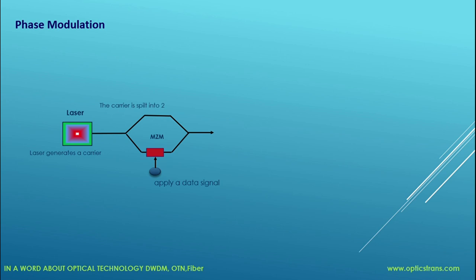Let's have a look at how this works. Light is generated in the Mach-Zehnder and split into two. They apply a data signal on both arms of the waveguide. The carriers travel over different paths: the upper arm goes with 90 degrees and the lower arm goes with 180 degrees.